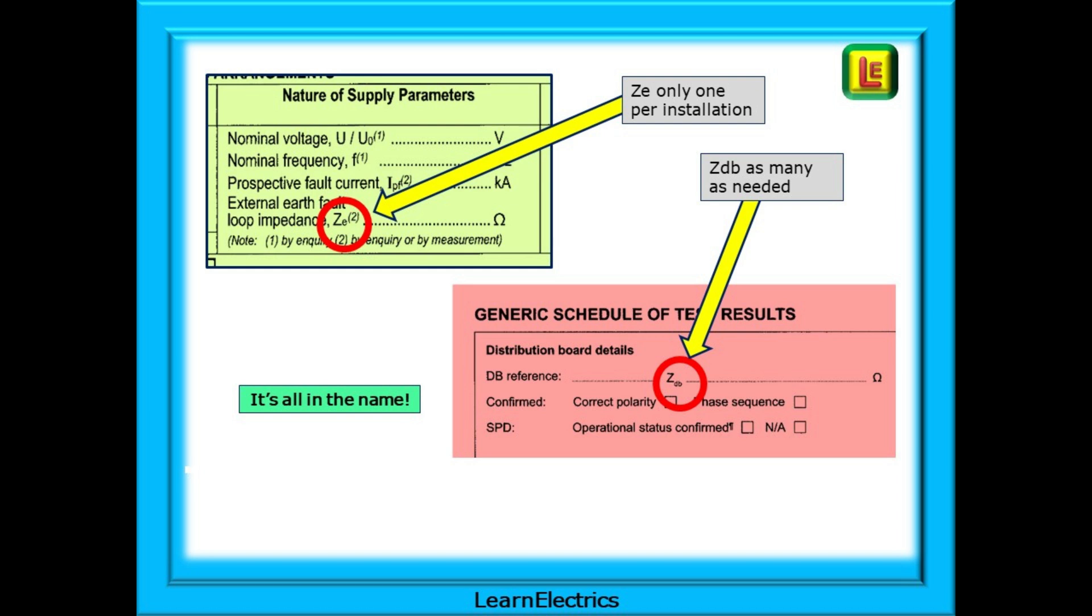ZDB just means the earth fault loop impedance measured at the main switch of this consumer unit. There is only one ZE for an installation, the point at which the supply enters the installation. But there can be as many ZDBs as needed. It's the same measurement, the same point on each consumer unit. It's just the name that we call it that has changed. All that ZDB means is the Z or impedance measurement at this particular distribution board. ZDB.